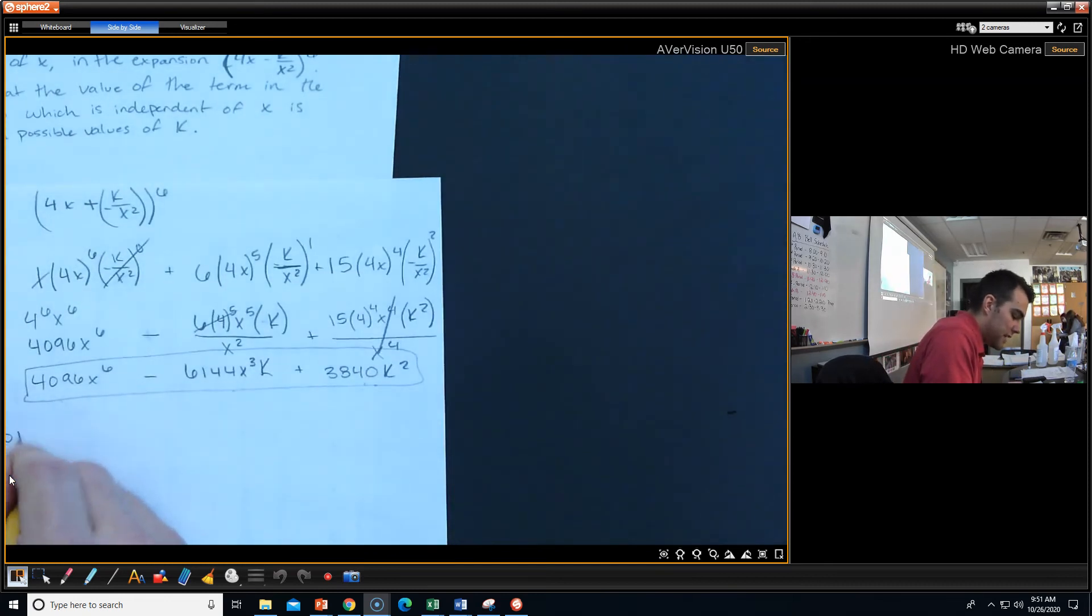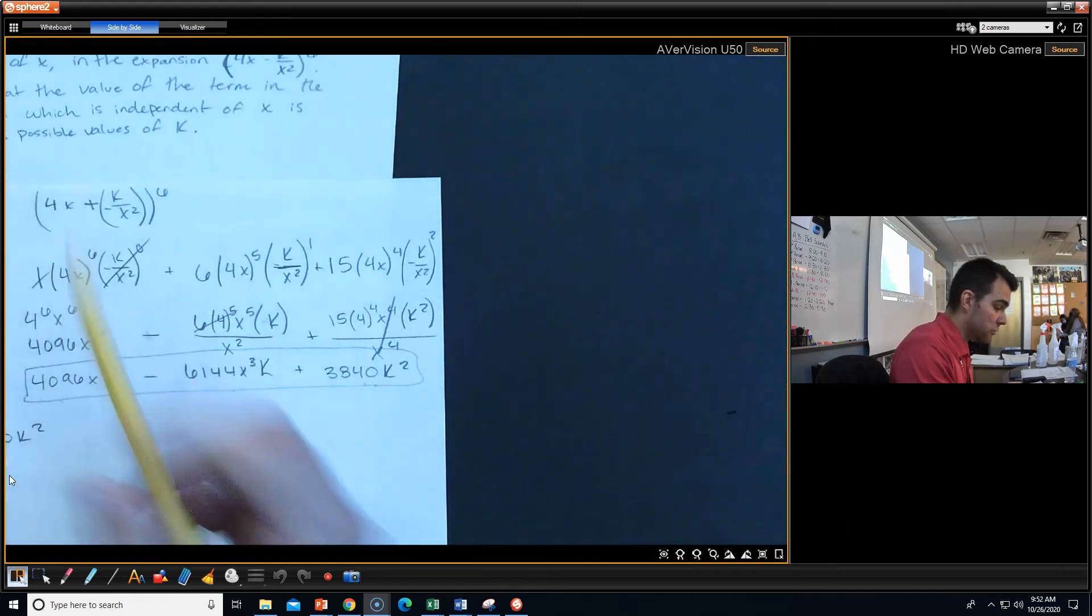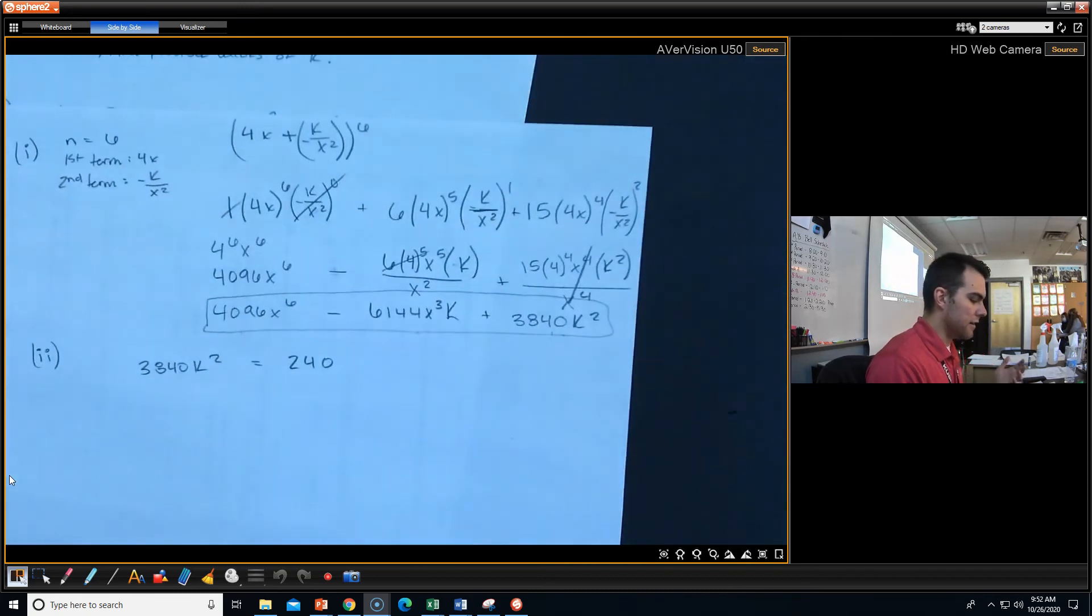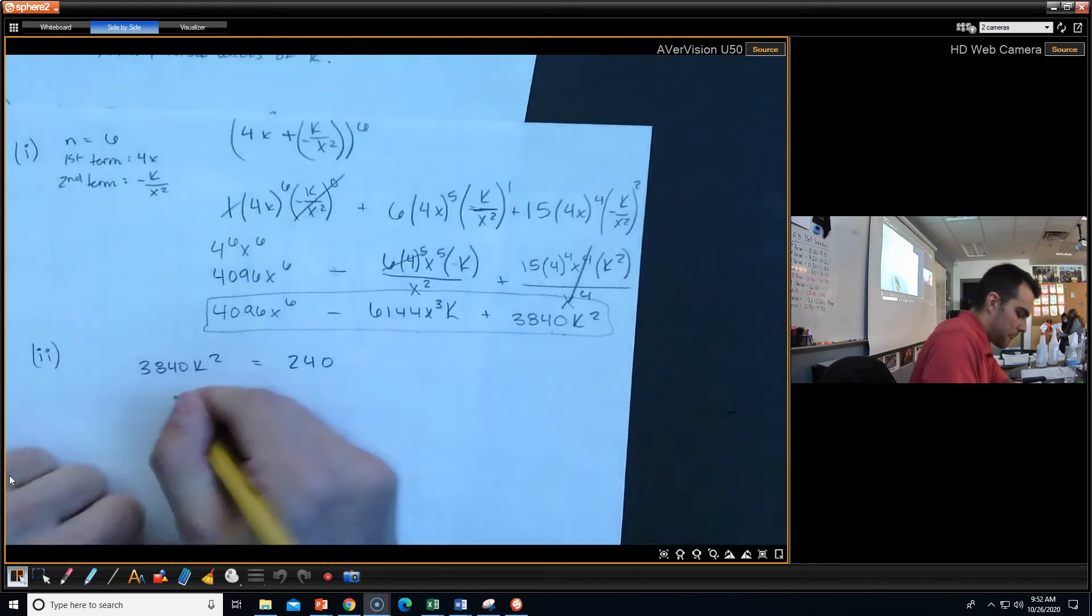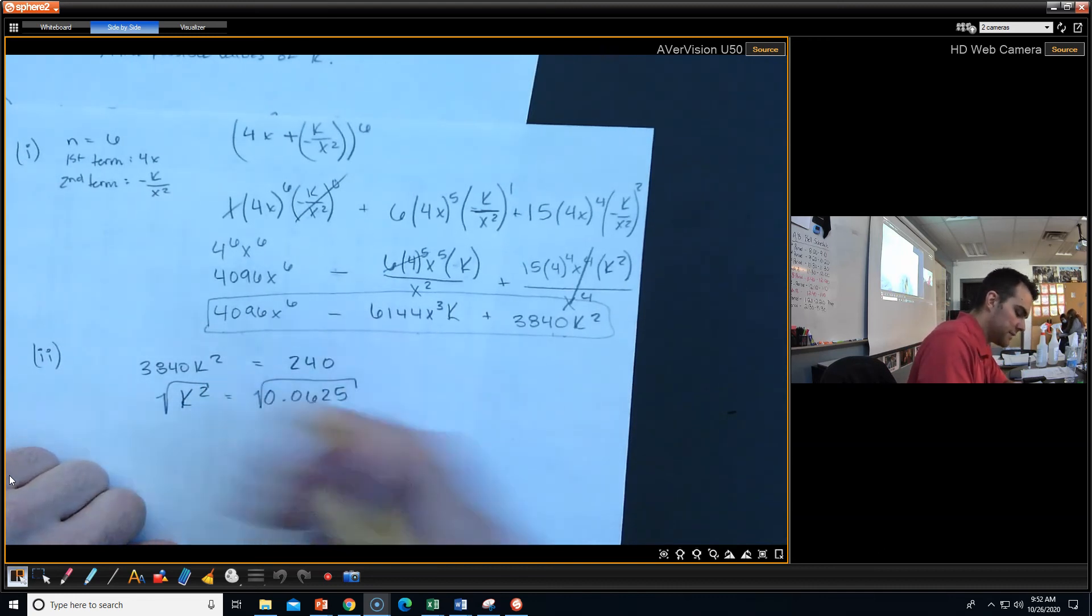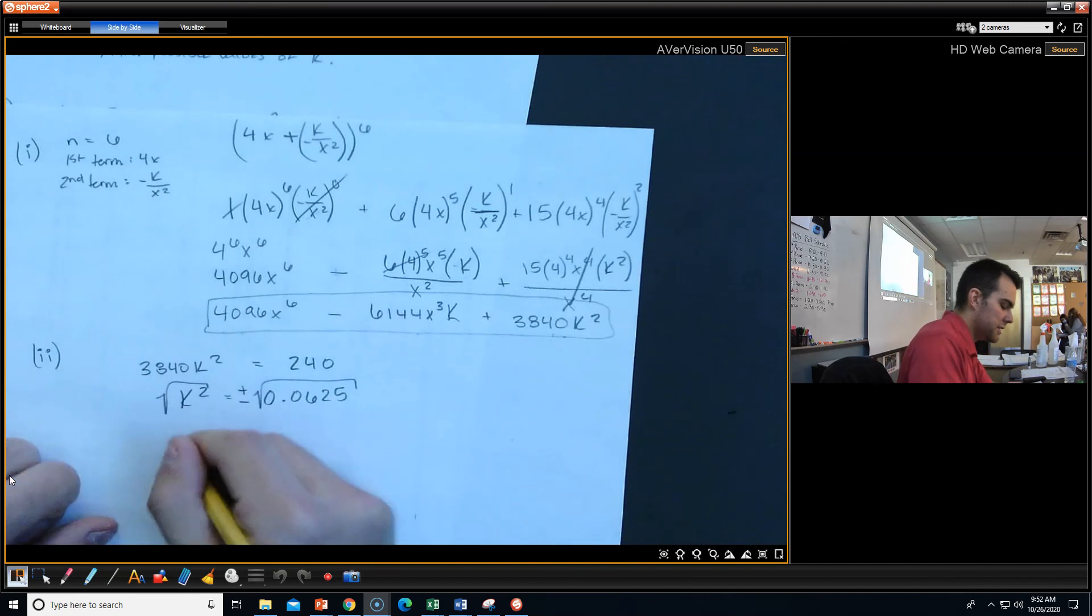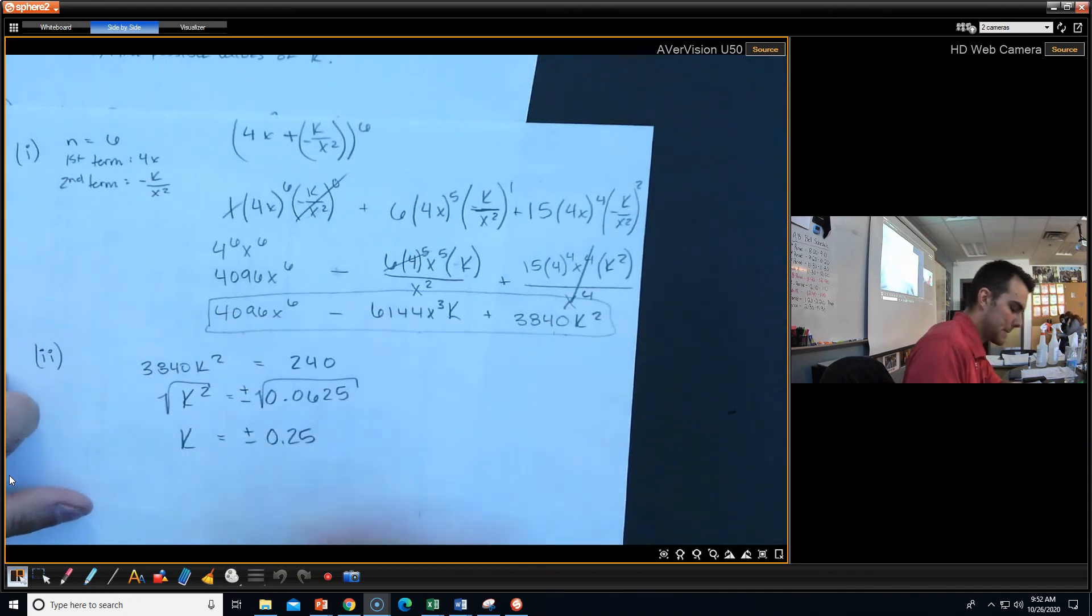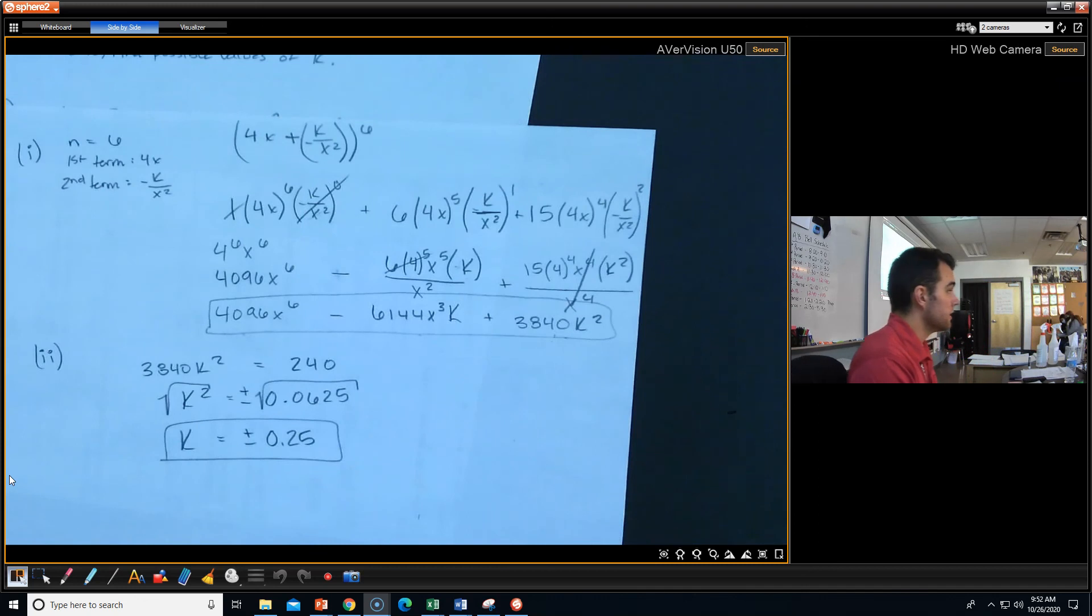So apparently 3,840 k squared is equal to 240. It says I want to find the possible values of k, so what we're going to do is just solve k like we normally would. I'm going to divide both sides by 3,840, so I end up getting k squared equals 0.0625. And finally we want to take the square root of both sides. What can I not forget? Plus or minus, right? And if I take the square root of that guy, I should get 0.25.